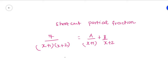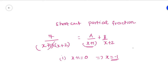If the partial fraction is type 1, first look at the denominator of A — that is (x+1). Set x+1 equal to zero, so x equals minus 1. Substitute x equals minus 1 into the left-hand side, discarding the denominator of A. This gives A equals 7 divided by (minus 1 plus 2), which equals 7.